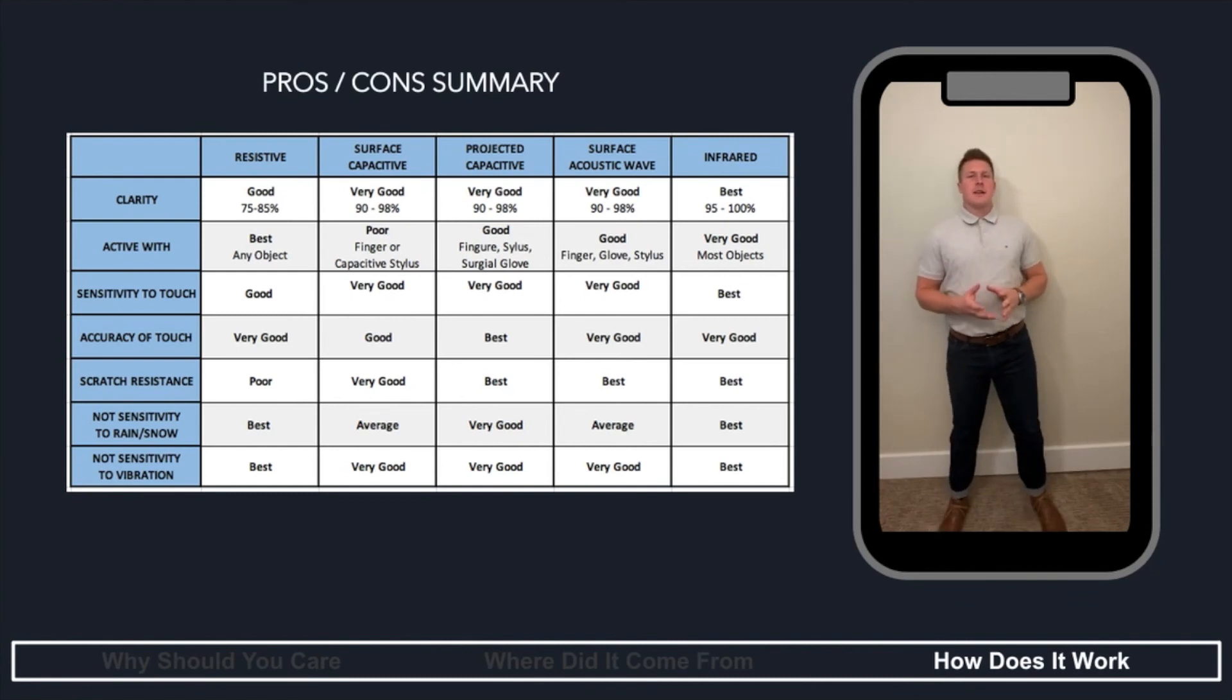Lastly, infrared touchscreen technology. As you can see in the chart, it's probably the best technology as far as these categories go. I would say one of the disadvantages, however, is it is using those light rays, so pretty much anything can set it off. If you drop a piece of food on your phone, it's going to activate it. Or if it's in your pocket and gets bumped around, it's going to sense that as someone's touching the touchscreen.